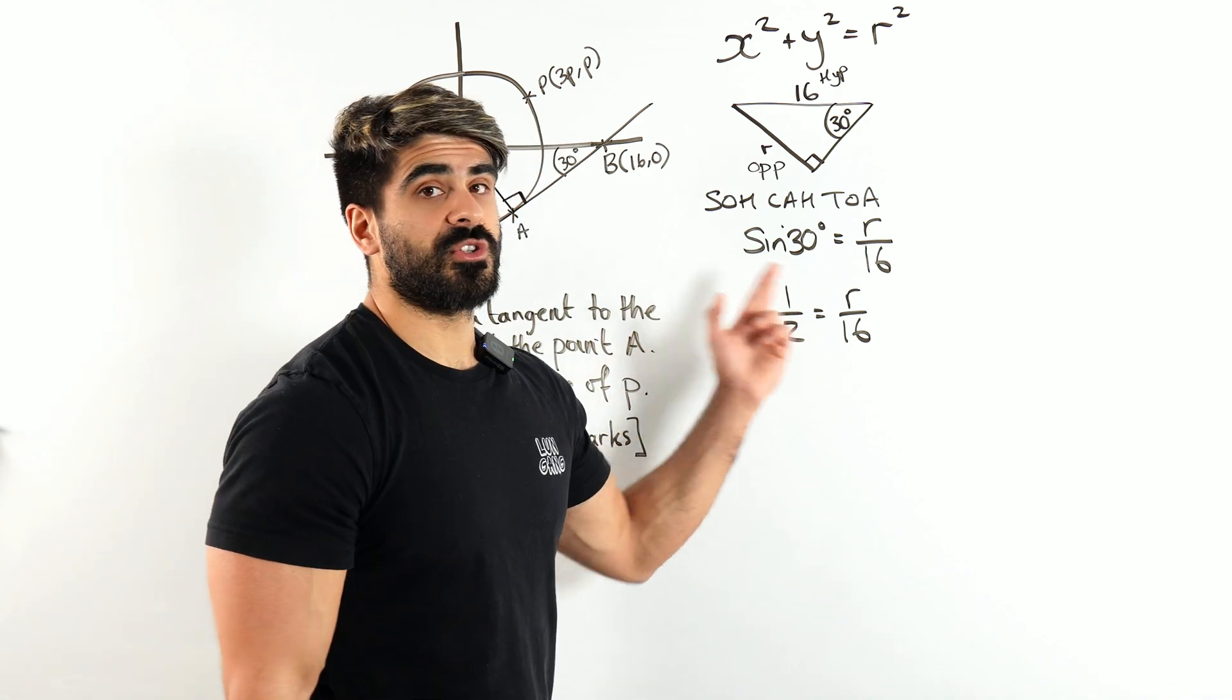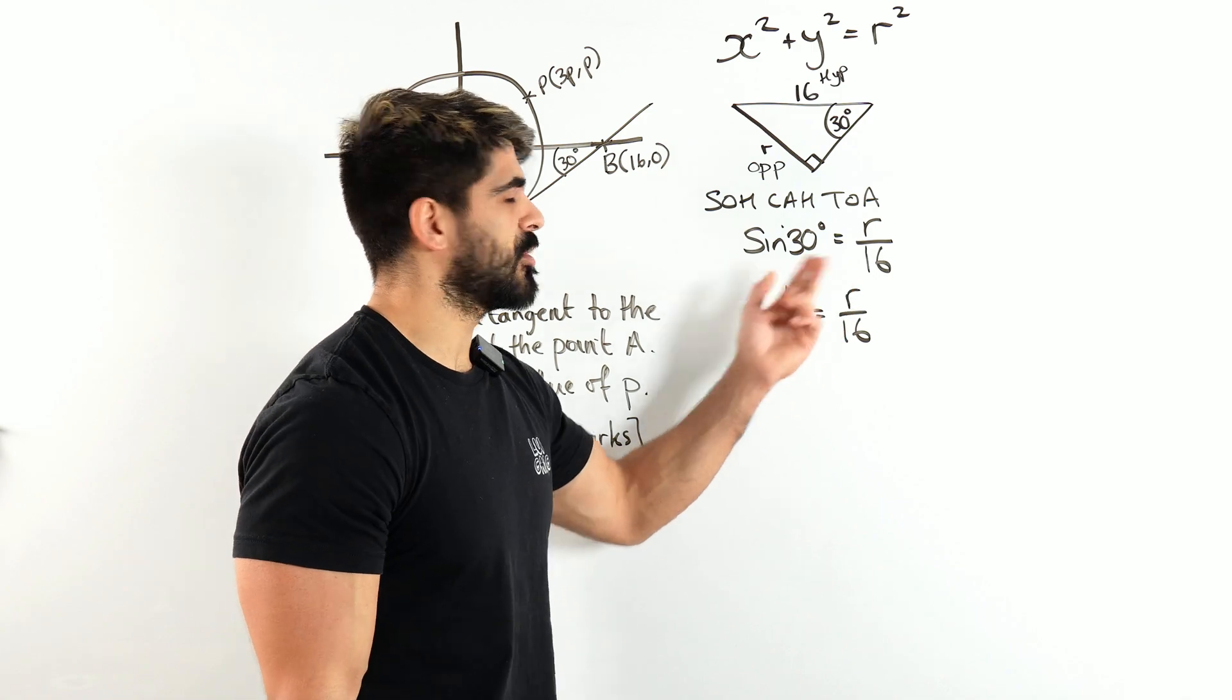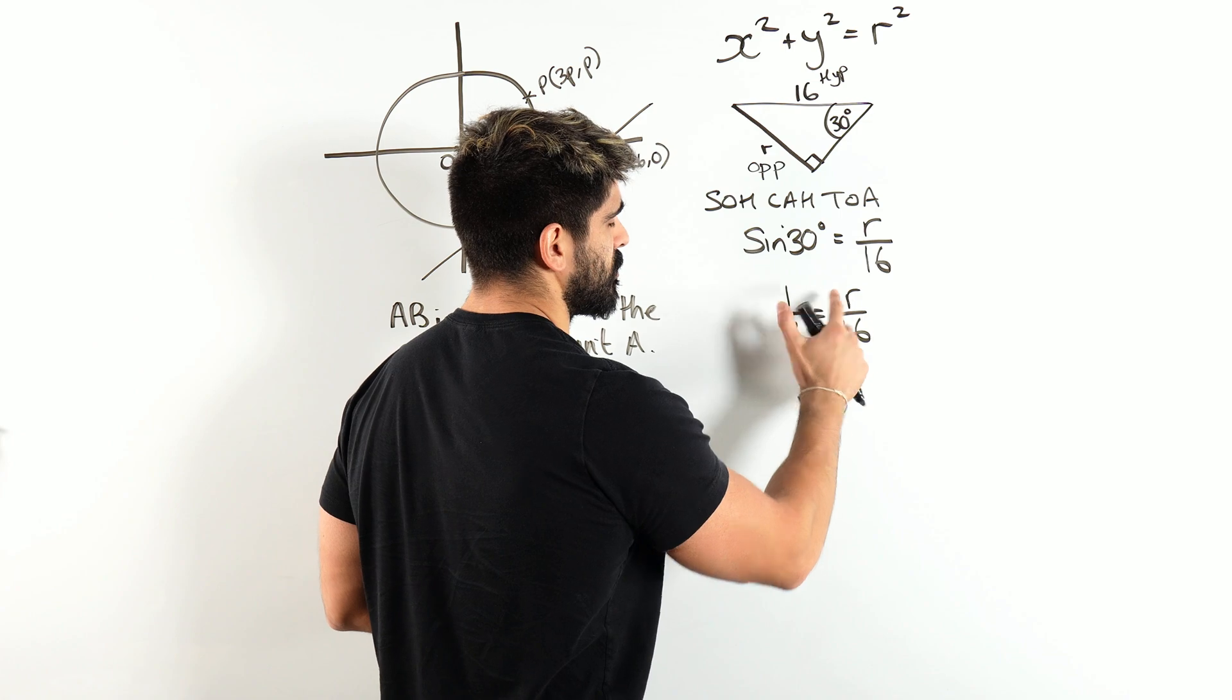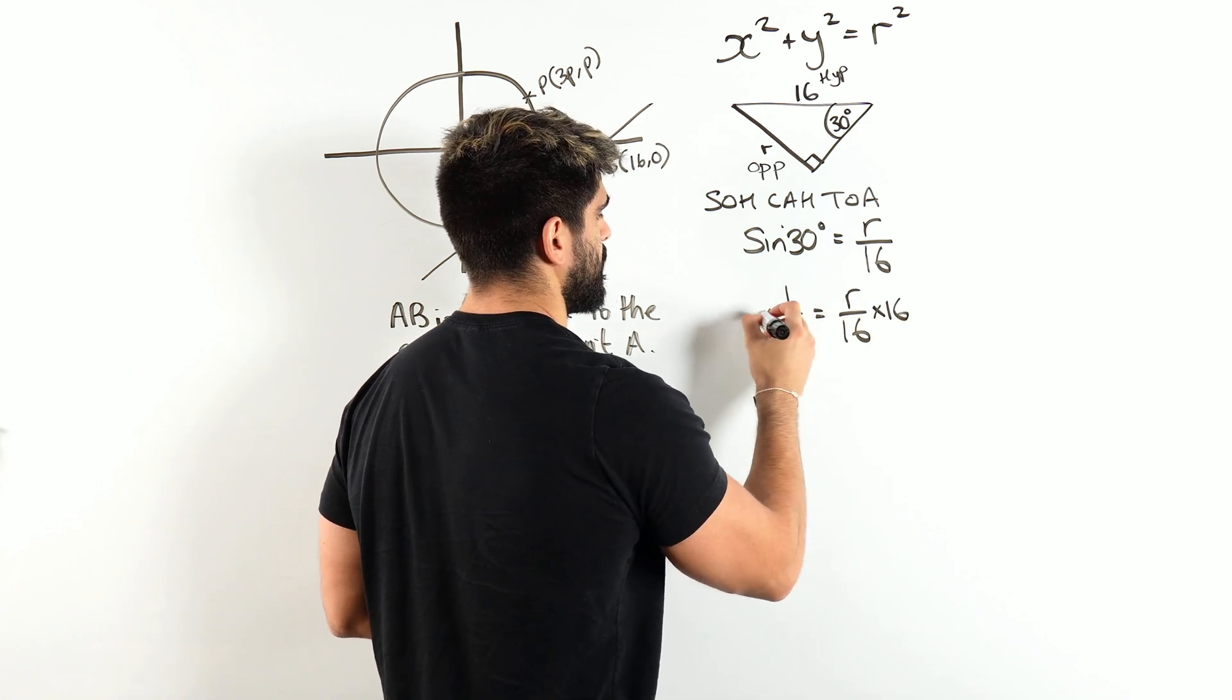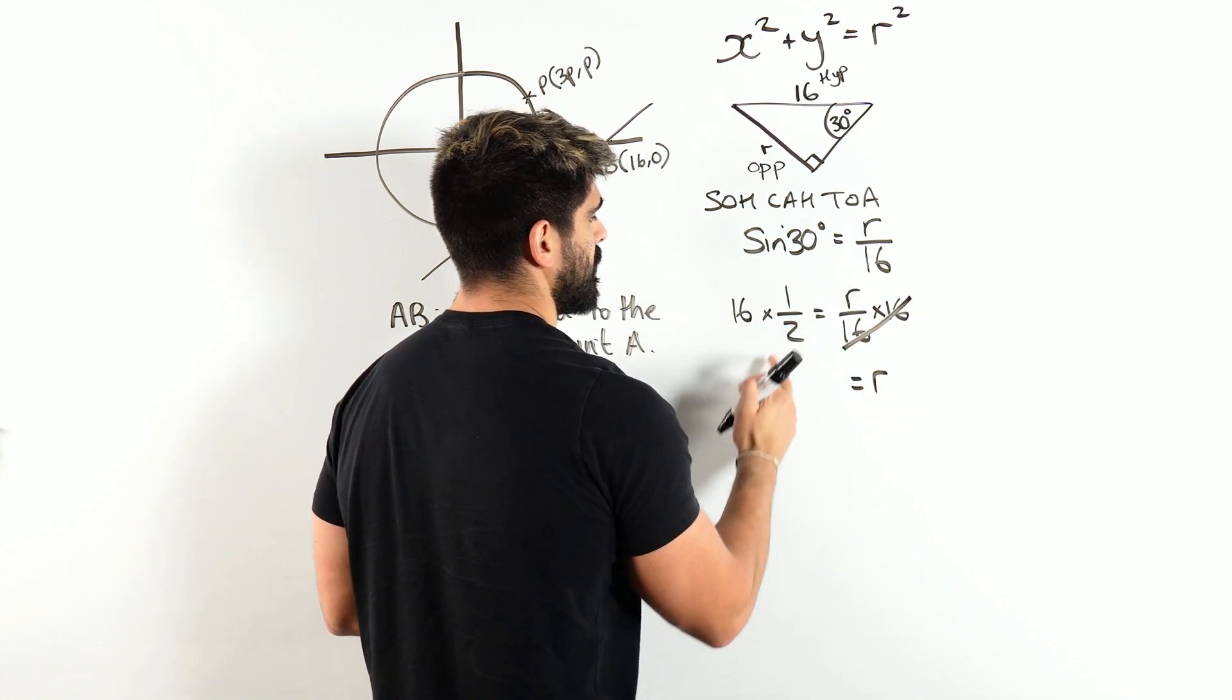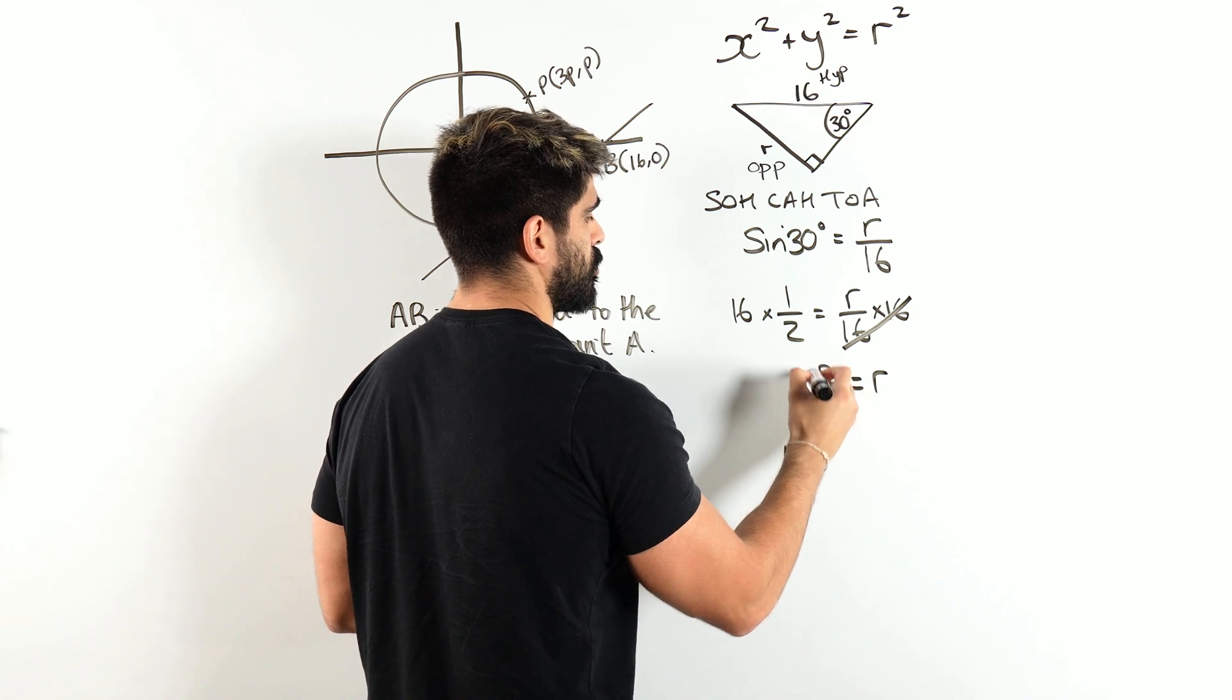So sine of 30 is 1 half equals R divided by 16. And we just need to rearrange for R. Now what some students like to do here is cross multiply. Remember we're just trying to rearrange for R. So this is R divided by 16. So to rearrange for R, I'm going to times by 16 on both sides. That's going to give R is 1 half of 16, which is 8. Nice.